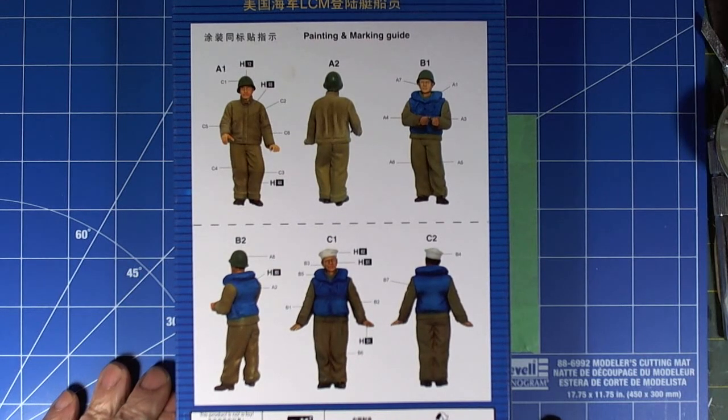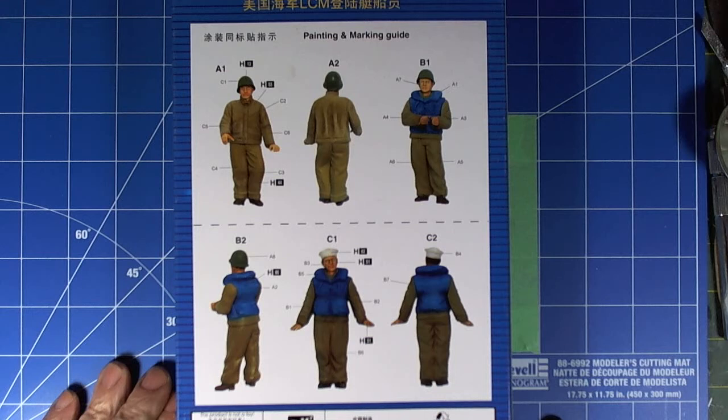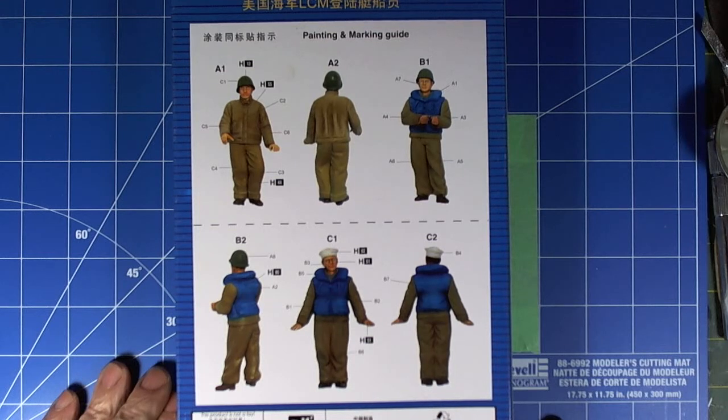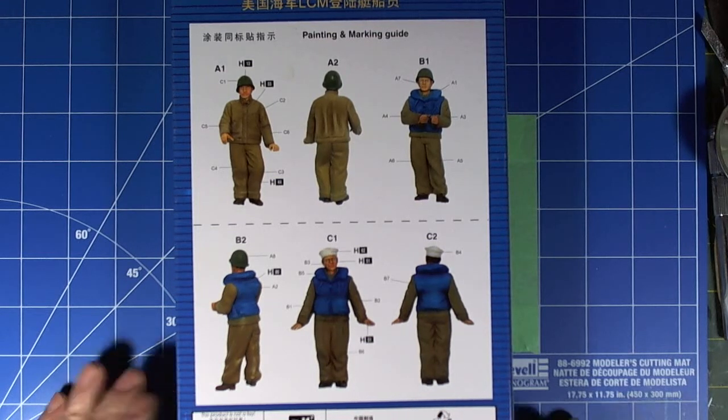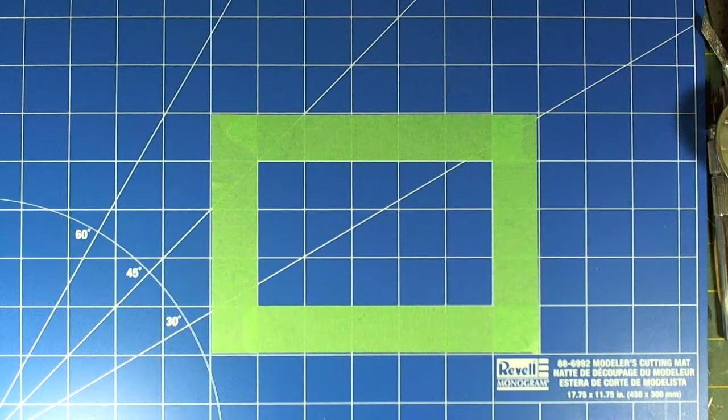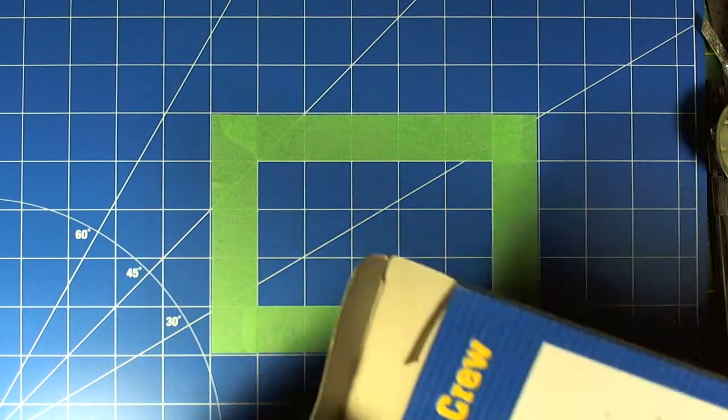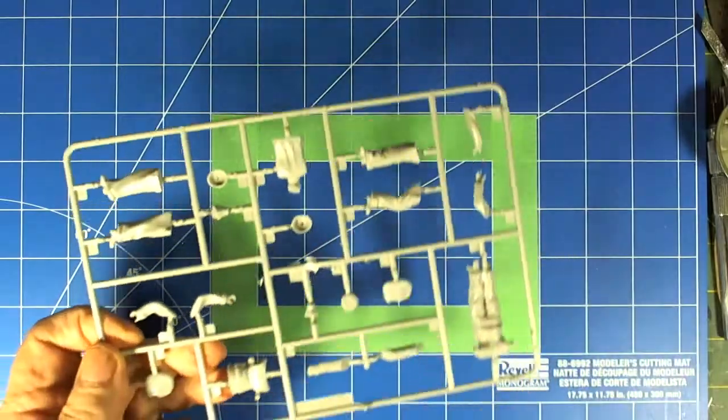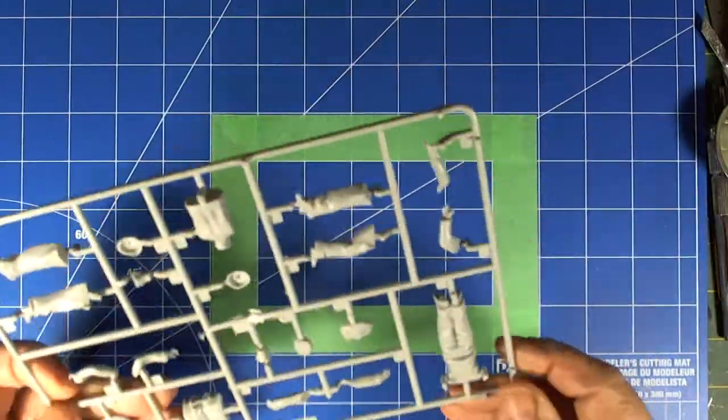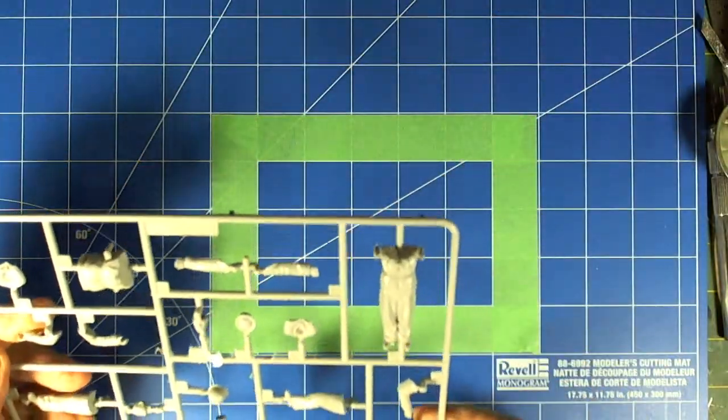There's six figures, two sprues, and here is one of them. The detail, we're going to zoom in on this.